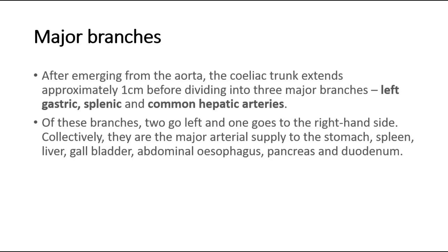Of these branches, two go left and one goes to the right-hand side. Collectively, they are the major arterial supply to the stomach, spleen, liver, gallbladder, abdominal esophagus, pancreas, and duodenum.